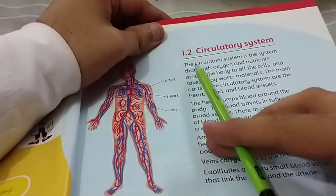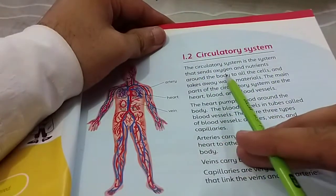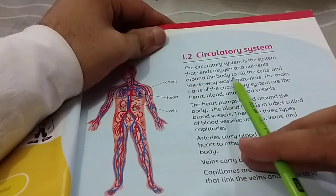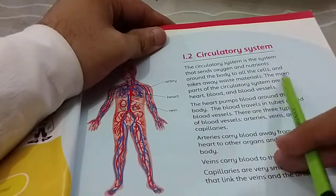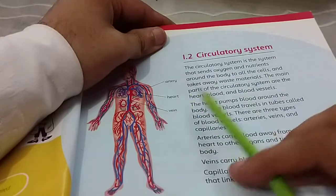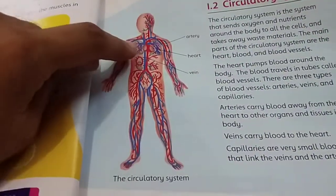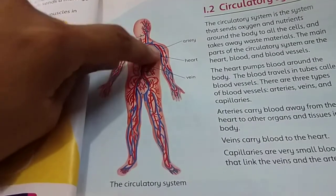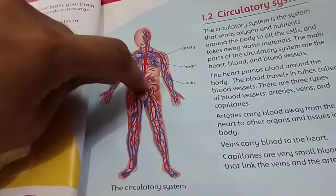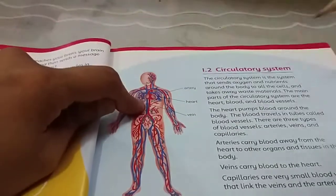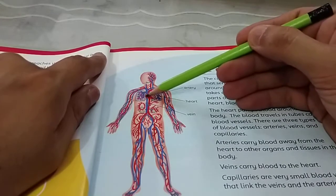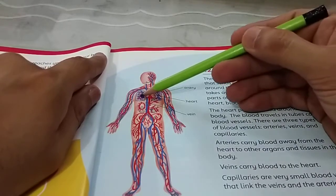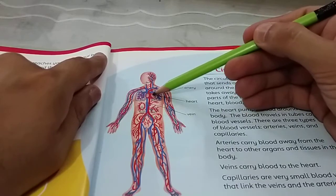Let's read: the circulatory system is the system that sends oxygen and nutrients around the body to all the cells and takes away waste material. If you look at the picture, the red vessels are arteries, this is the heart, and these are the veins. You can see the heart is a little bit on the left side, so the left lung is a bit smaller than the right lung.